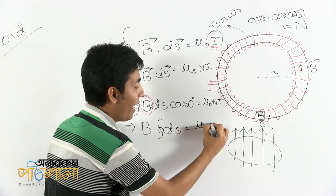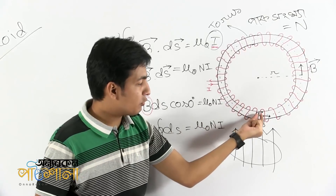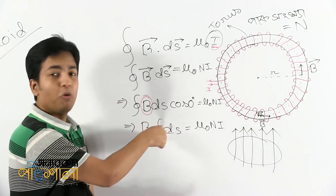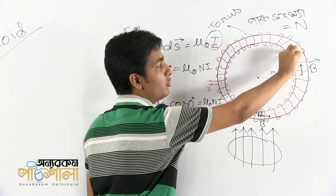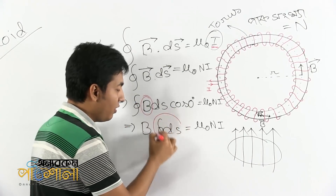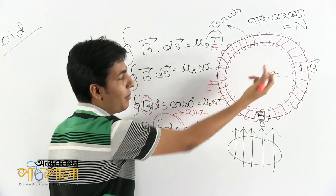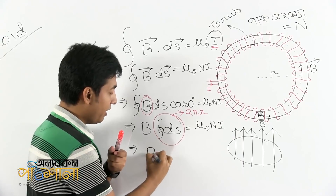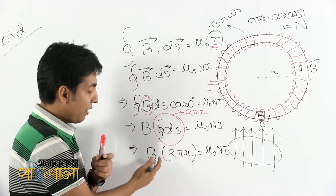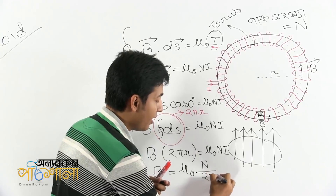So we get B dot ds equal to mu naught N i. The ds integrated over the closed circular path gives 2 pi r. So B times 2 pi r equals mu naught N i. Therefore, B is equal to mu naught N divided by 2 pi r, times i.